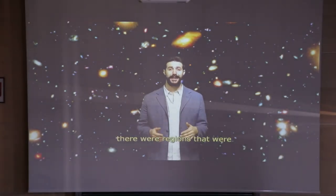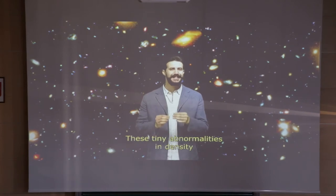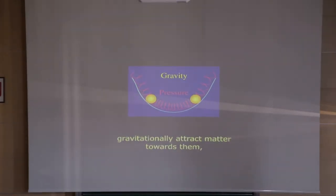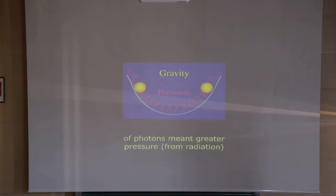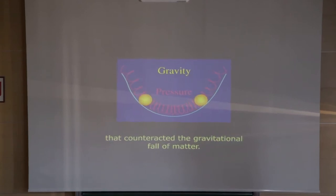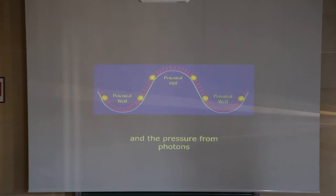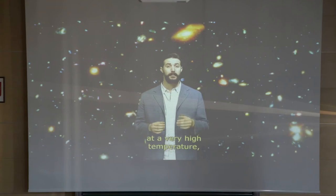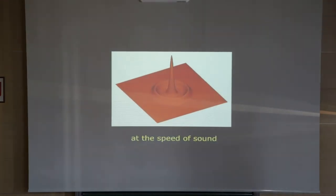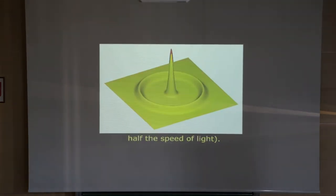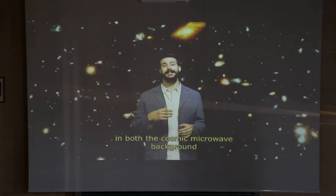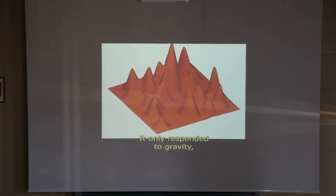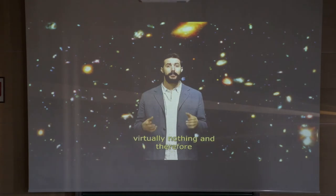In this photon-baryon plasma, there were regions slightly more dense than the average. These small anomalies in density were generated by quantum fluctuations in the first instants after the Big Bang. Gravity tried to attract matter toward these regions, but at the same time, greater density implied greater radiation pressure, which counteracted gravity. The gravity of an overdensity tried to collapse it, while photon pressure had the contrary effect. Since photons and the baryon gas were coupled in a single fluid at very high temperature, radiation dragged the baryons outward in a sphere expanding at approximately half the speed of light.